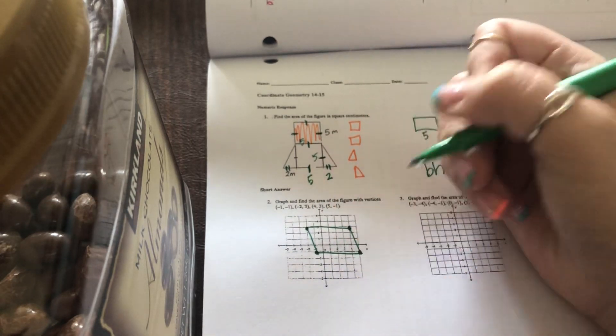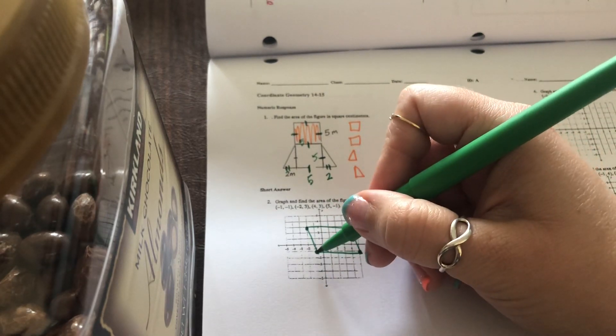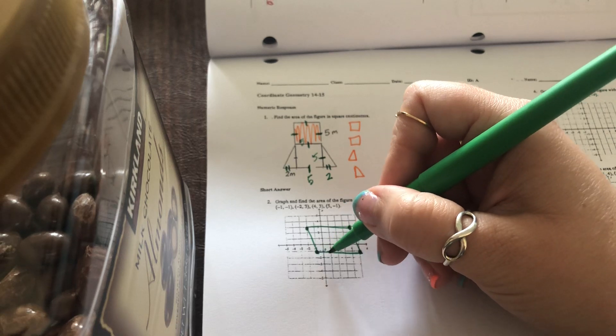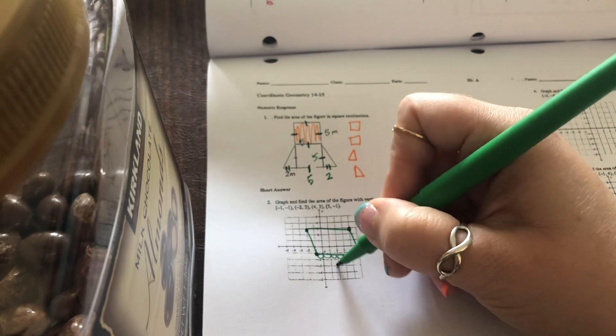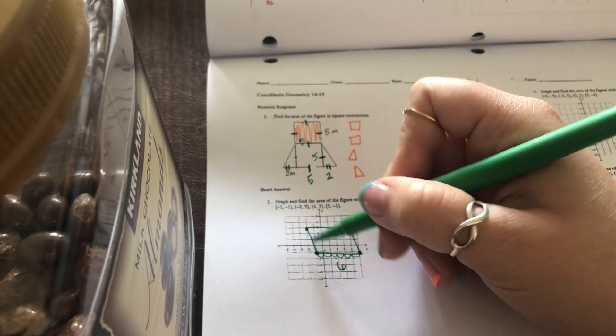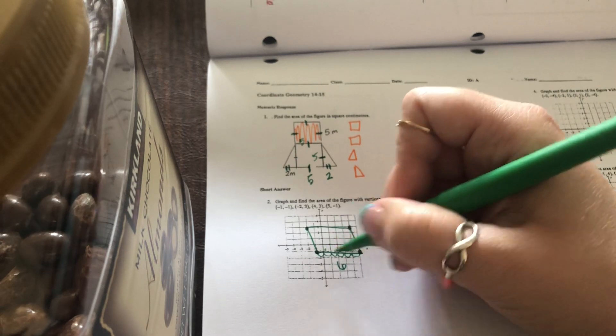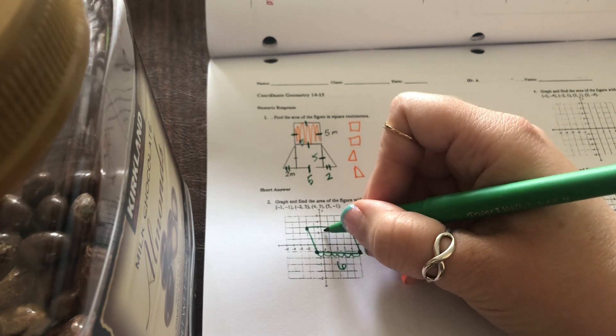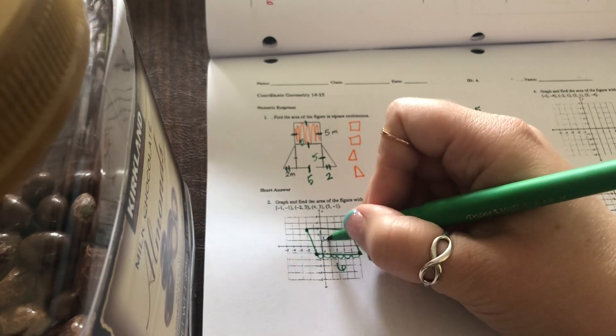So my base, you can count them by moving along. And remember, you don't start counting until you actually move. So this is one, two, three, four, five, six for my base. And I can't find a diagonal distance. You can only find perpendicular, like perfectly straight ones. So this height covers a distance of one, two, three, four. So it has a height of four.